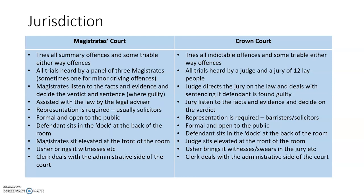The Crown Court will try all indictable offences and some triable either way offences. All trials are heard by a judge and a jury of 12 laypeople. The judge directs the jury on the law and deals with sentencing if the defendant is found guilty. The jury listens to the facts and evidence and decides on the verdict — guilty or not guilty. Representation is required, and at this level it tends to be barristers, though sometimes solicitors. It's formal and open to the public. The defendant sits in the dock at the back, and the judge sits on an elevated platform at the front. The usher brings in witnesses and swears in the jury, and the clerk deals with the administrative side of the court.